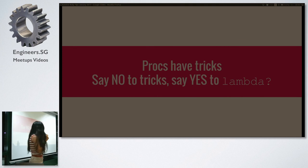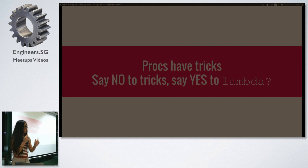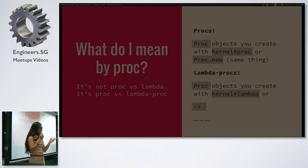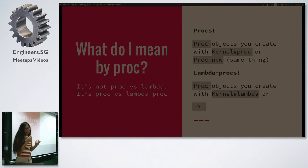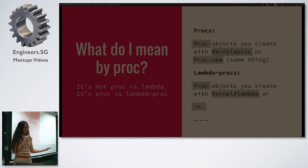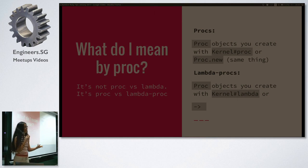The gist of this tip: procs have tricks, tricks are nasty things. Say no to the tricks and say yes to lambdas. So first, what do I mean by a proc? I'm going to use slightly new terminology — proc versus lambda proc — you'll see why soon. Procs are instances of the proc class created with Kernel#proc or Proc.new, and they do the same thing. In Ruby 1.8.7 they didn't, but now they do.